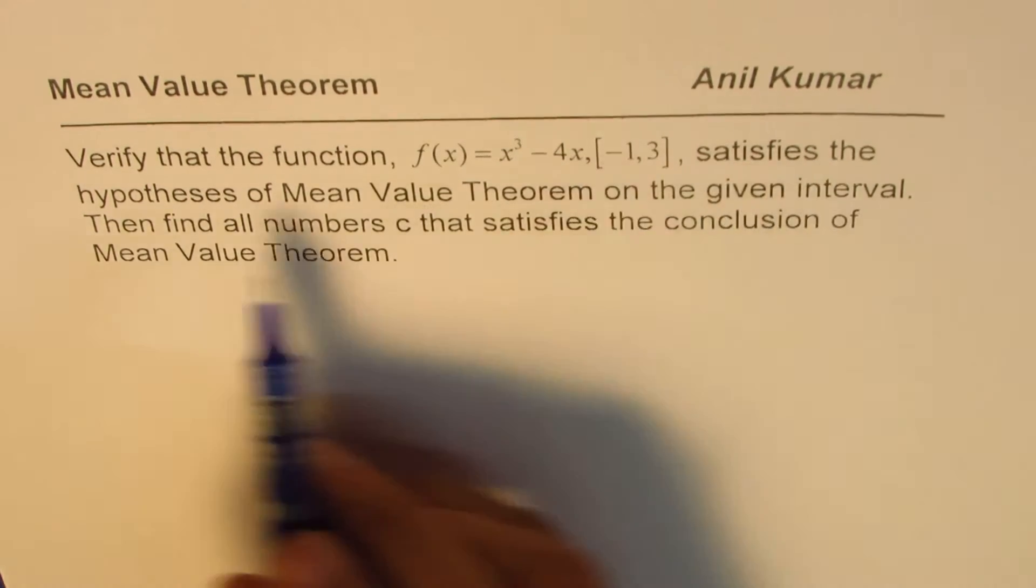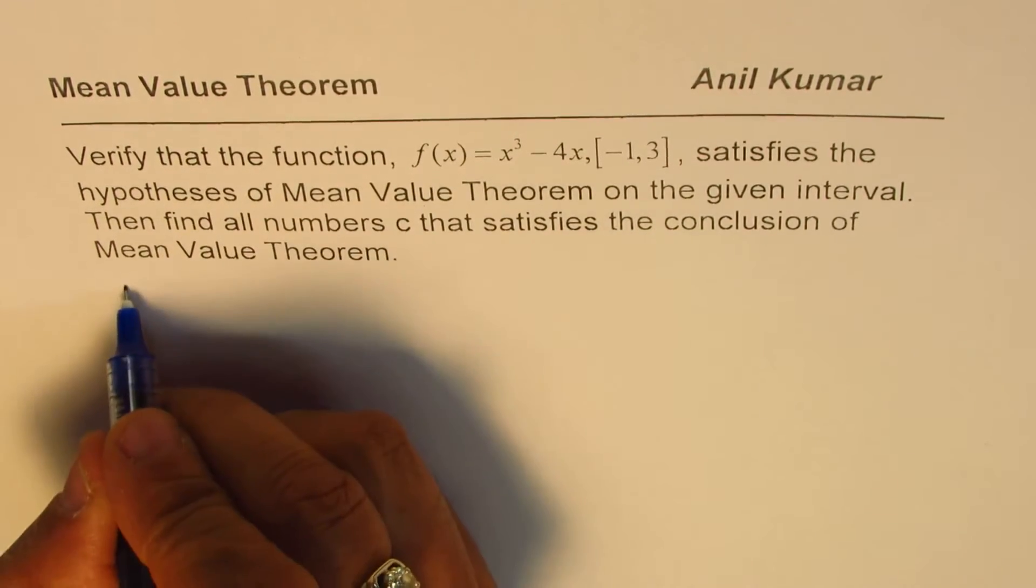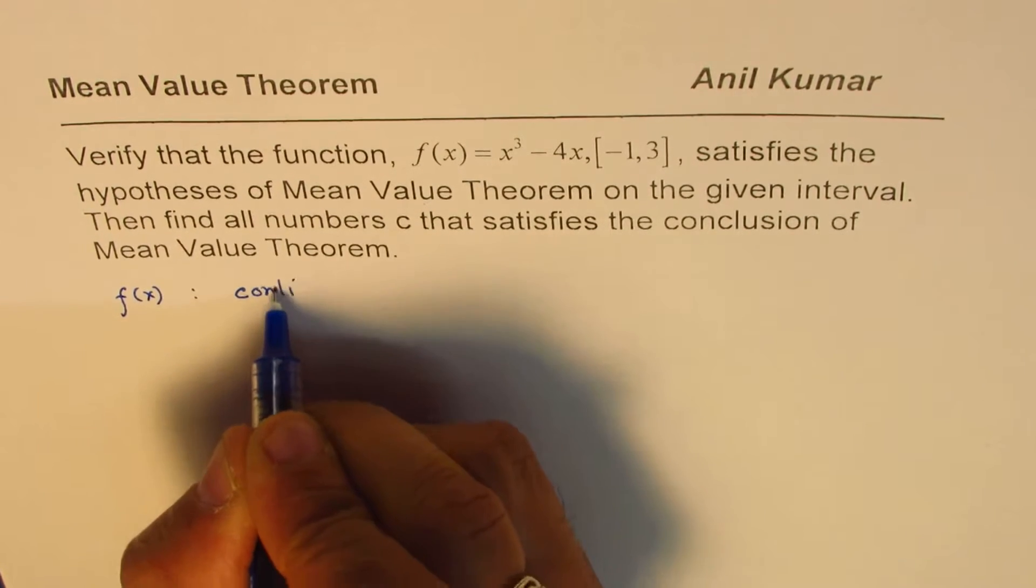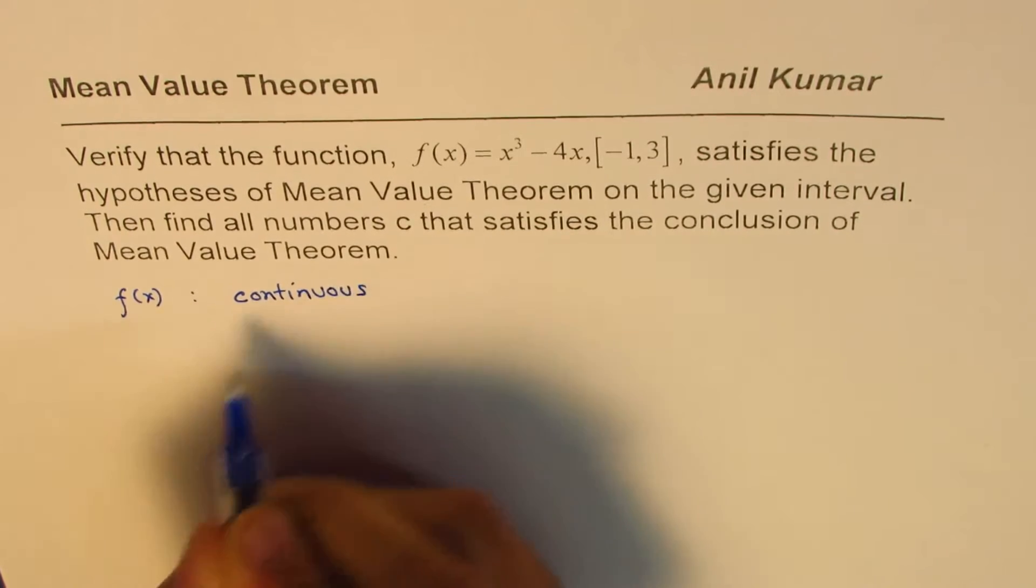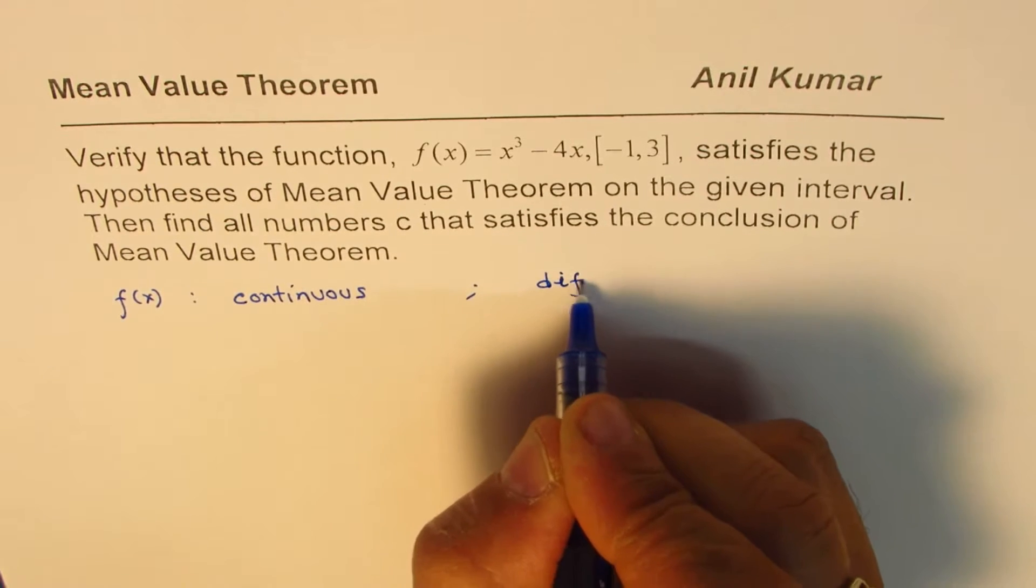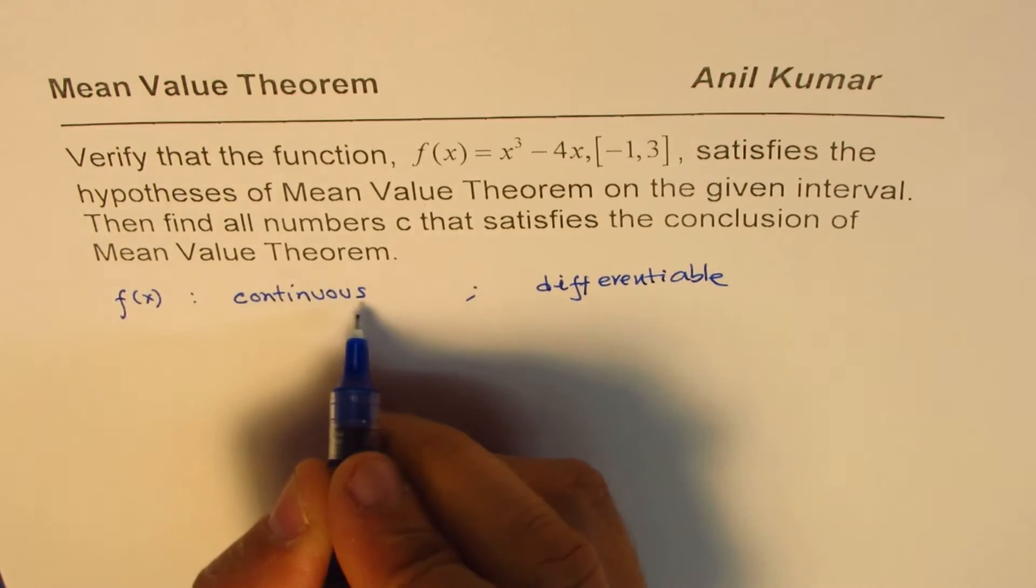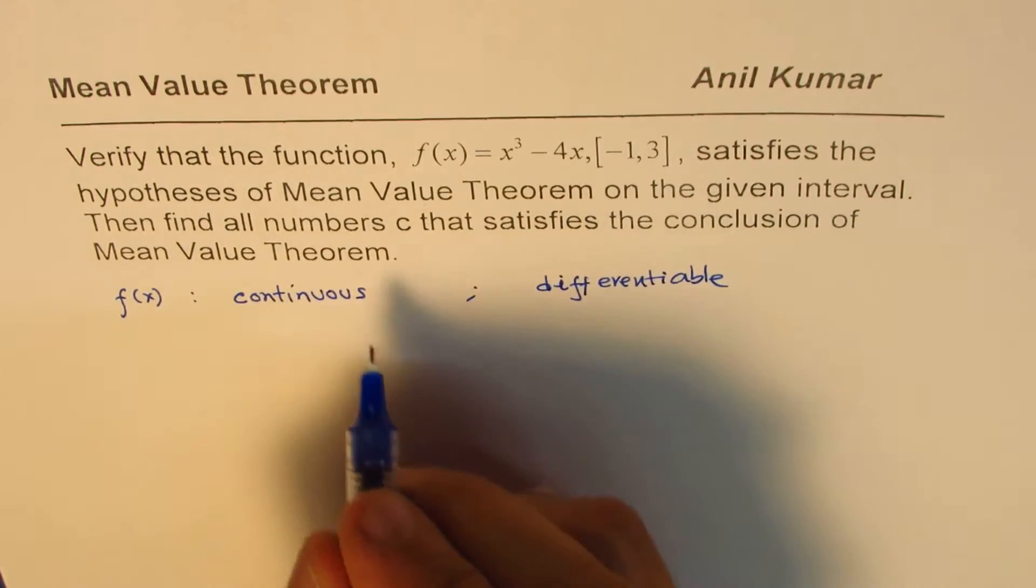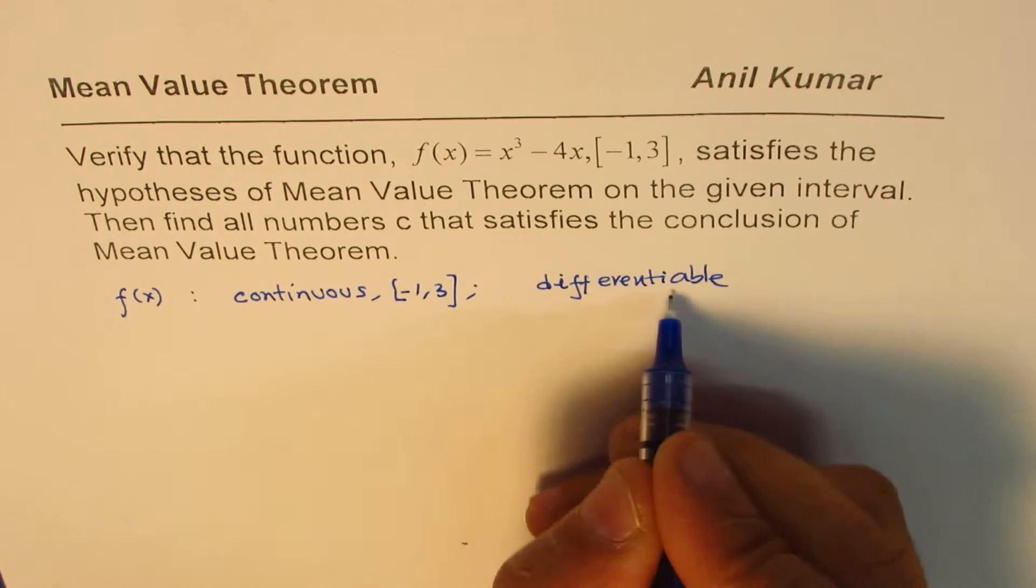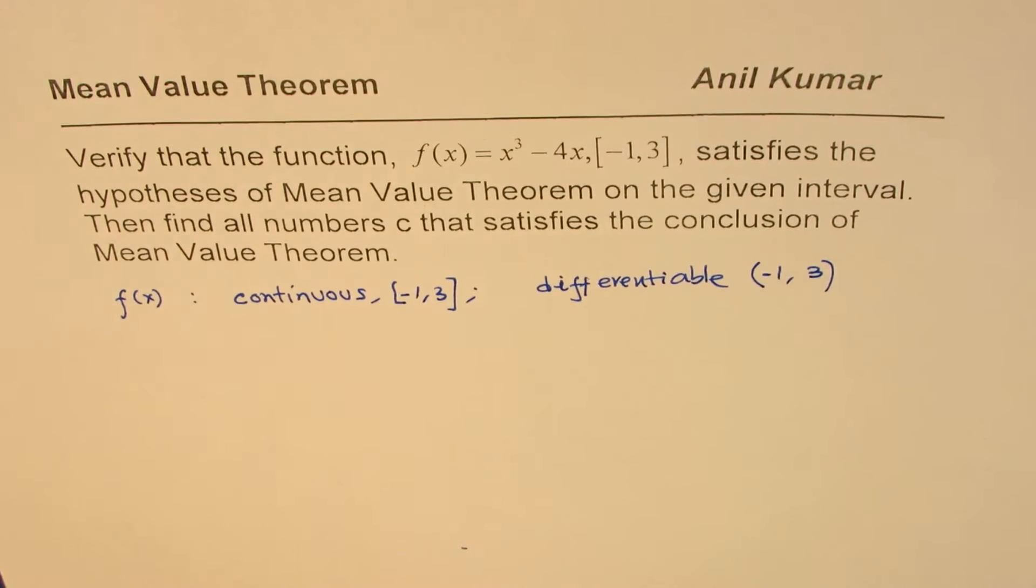Now, to satisfy the hypothesis, we have two hypotheses. One is regarding that the function f of x should be continuous, and the other one is that it should be differentiable. It has to be continuous in the closed interval, which is given to us as minus 1 to 3, and it has to be differentiable in the open interval minus 1 to 3. So, these are the two conditions.